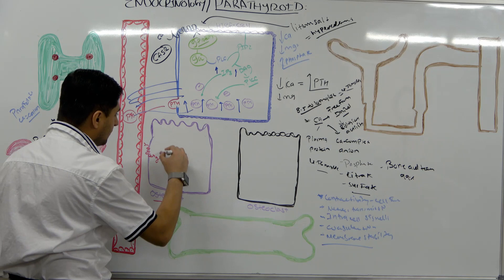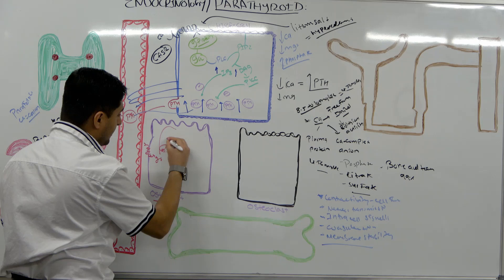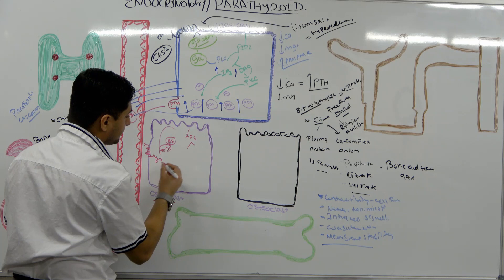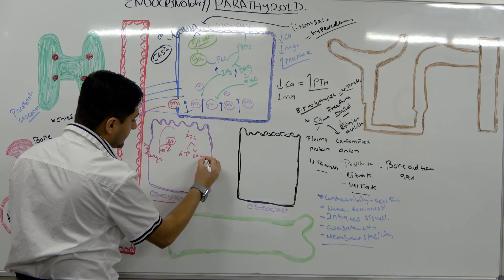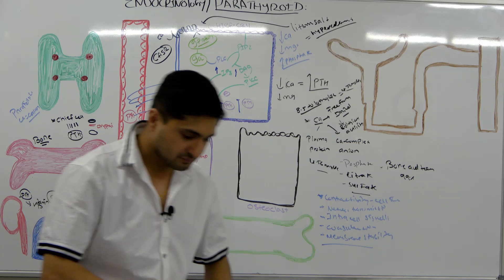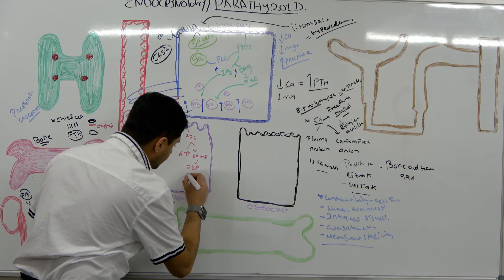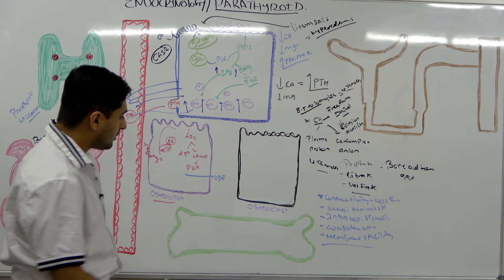This is the GS pathway. GTP binds with the Gs protein, which then stimulates adenylyl cyclase, converting ATP into cyclic AMP. This cyclic AMP then activates certain genes, and ultimately what is produced is the so-called ODF — osteoclast differentiating factor.